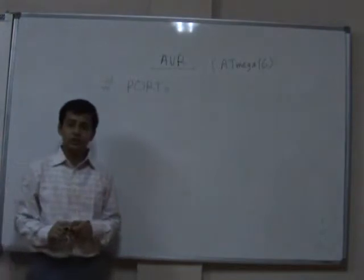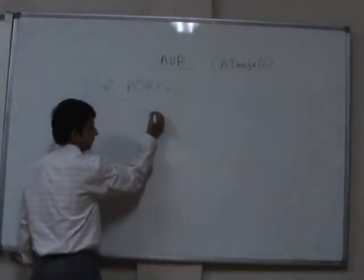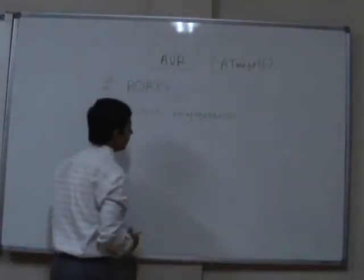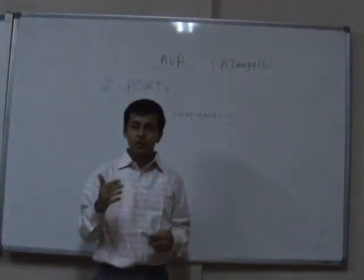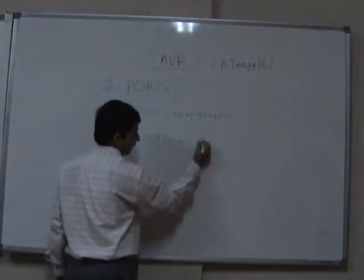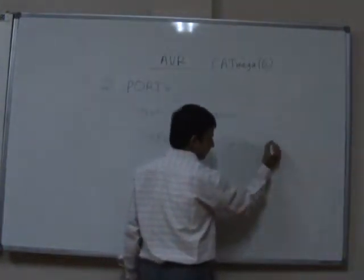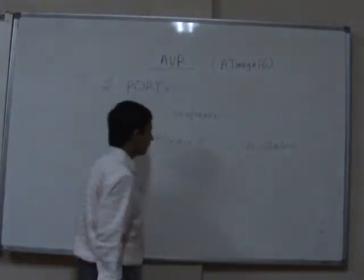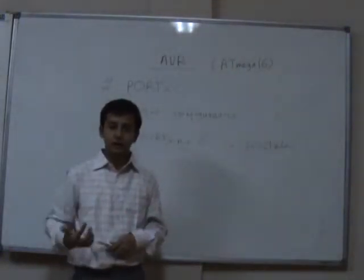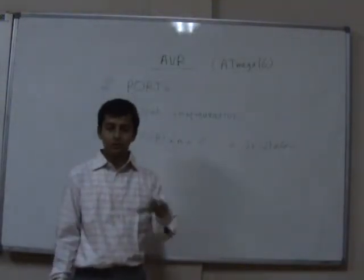The second function of the port register is configuring the type of input — tri-stated or pull-up. Whenever a port is configured as an input port, if a bit in the port register is set to 0, that particular pin becomes a tri-stated input pin. Tri-stated means the pin goes into a state of high impedance, where it is directly connected to the internal buffer and floats, having no fixed logical value.